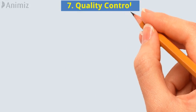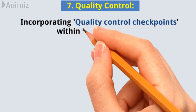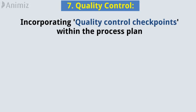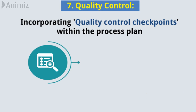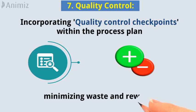7. Quality Control: Incorporating quality control checkpoints within the process plan helps detect defects or deviations early in the production process, minimizing waste and rework.